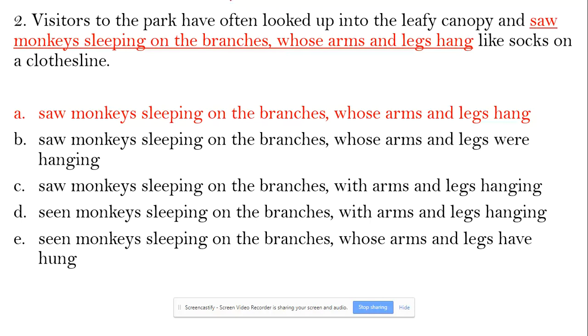Alright, so visitors have often looked and have seen, actually. It should be 'seen,' not 'saw' - incorrect verb. By the way, there is an incorrect modifier too. Actually, 'whose' means branches, arms and legs hang - incorrect. It should modify the monkeys, so incorrect modifier.